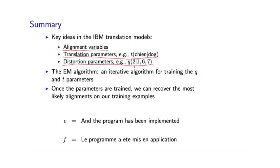We saw this parameter estimation algorithm, the EM algorithm. So this is an iterative algorithm for training the Q and T parameters. It starts off with some initial values for Q and T, and then recalculates them using the method I described. And we typically run this for several iterations or until convergence.